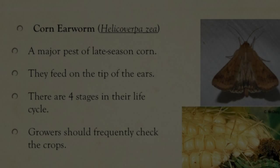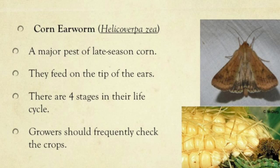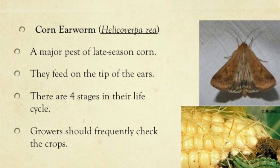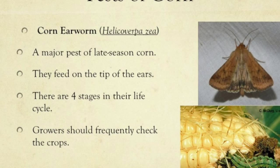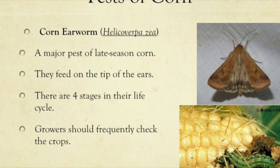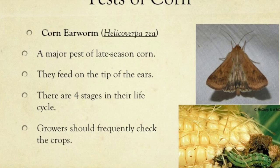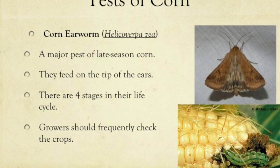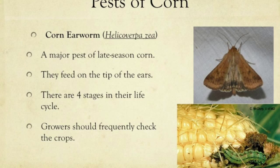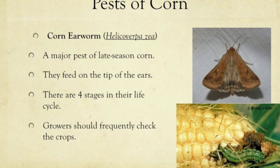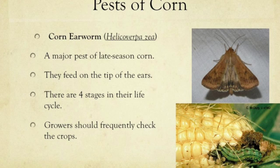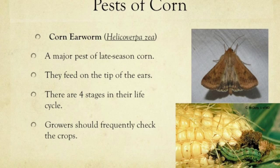Corn earworm, another pest of corn, also known as Helicoverpa zea, is a major pest of late season corn and is responsible for a large percentage of damaged corn. They feed almost exclusively on the tip of the ears, leaving no visible damage on the husks or the leaves. There are four stages in the corn earworm's life cycle: the moth lays eggs, which then hatch into larvae. After feeding for 2 to 4 weeks, the larvae become pupae. In cold climates, larvae are typically killed by frost before pupation. When corn earworms are present, all sweet corn with exposed silk is susceptible to damage. Earworms normally feed on the kernels of sweet corn, and growers are responsible for checking ears at harvest and culling the damaged ones regularly.